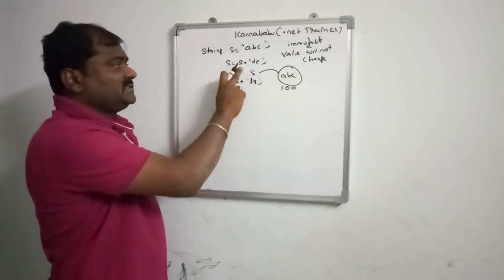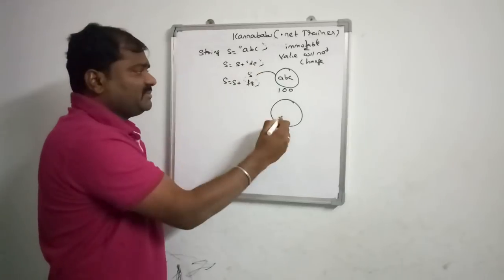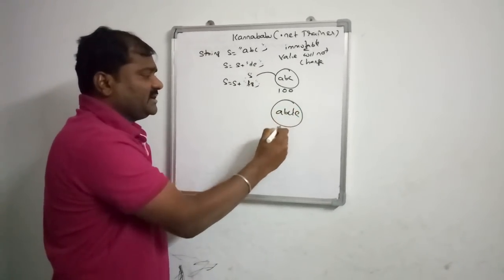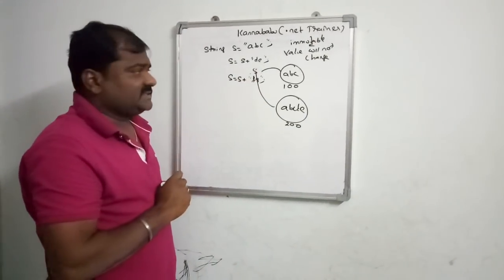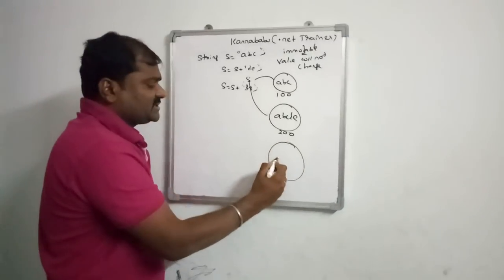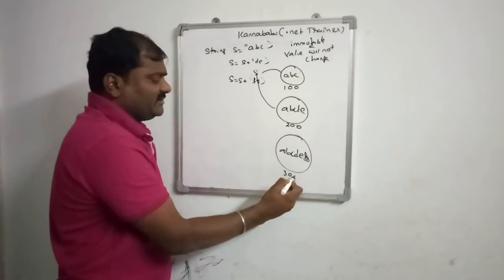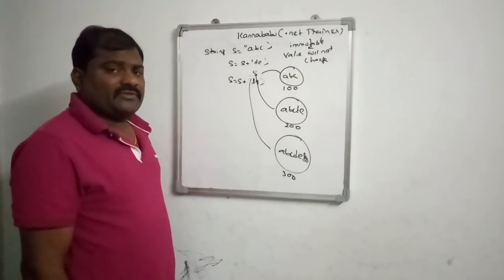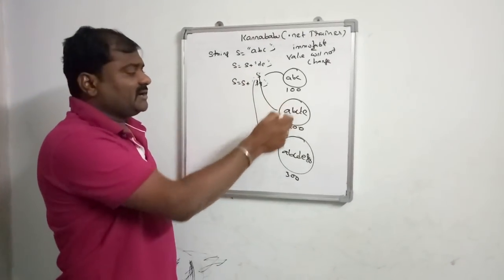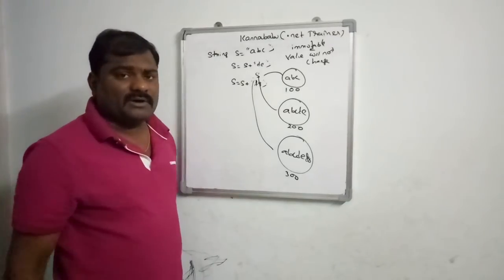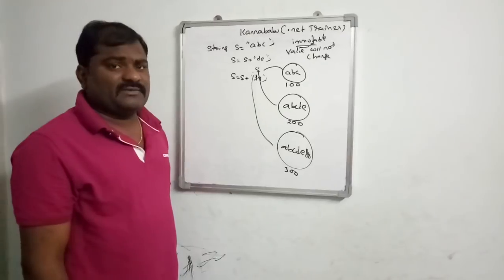In the first statement one object is created with reference S. In the next statement S = S + DE, a separate object is created with value ABCDE and address 200. Again in the third statement one more object is created with value ABCDEFJ and address 300. So whenever you perform a concatenation operation on string, each time a separate object is created — the existing value is not modified. This is why string is immutable.